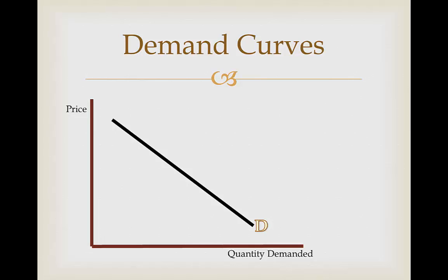We say that there's an inverse relationship between the price and the quantity demanded because it's slanting from the top left to the bottom right of the graph. As the price increases, quantity demanded tends to decrease — the higher the price is, quantity demanded gets closer to the zero end of the axis. The more expensive a product is, the less you're going to want to buy it, so as a result the demand for that product is likely to decrease.